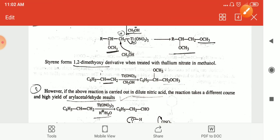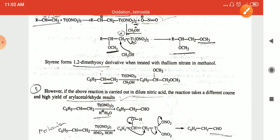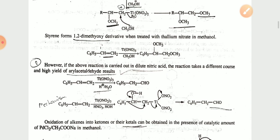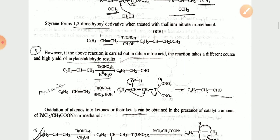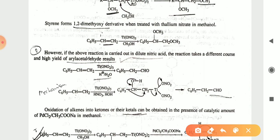However, if the reaction is carried out in dilute nitric acid, the reaction takes place at different conditions and gives a high yield of aryl acetaldehyde as the result. In the presence of thallium nitrate it will give the aryl acetaldehyde.